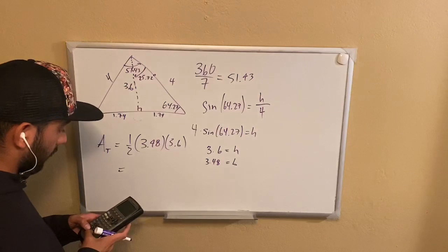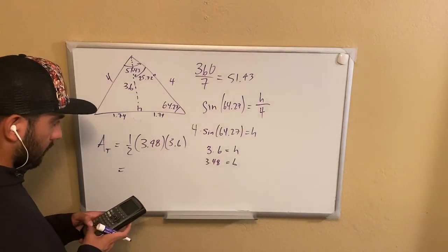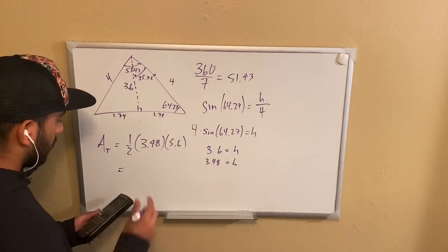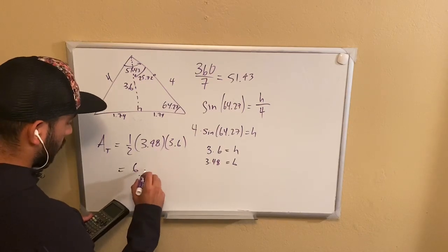That's going to give us 1.74 times 3.6. We're going to get 6.26.